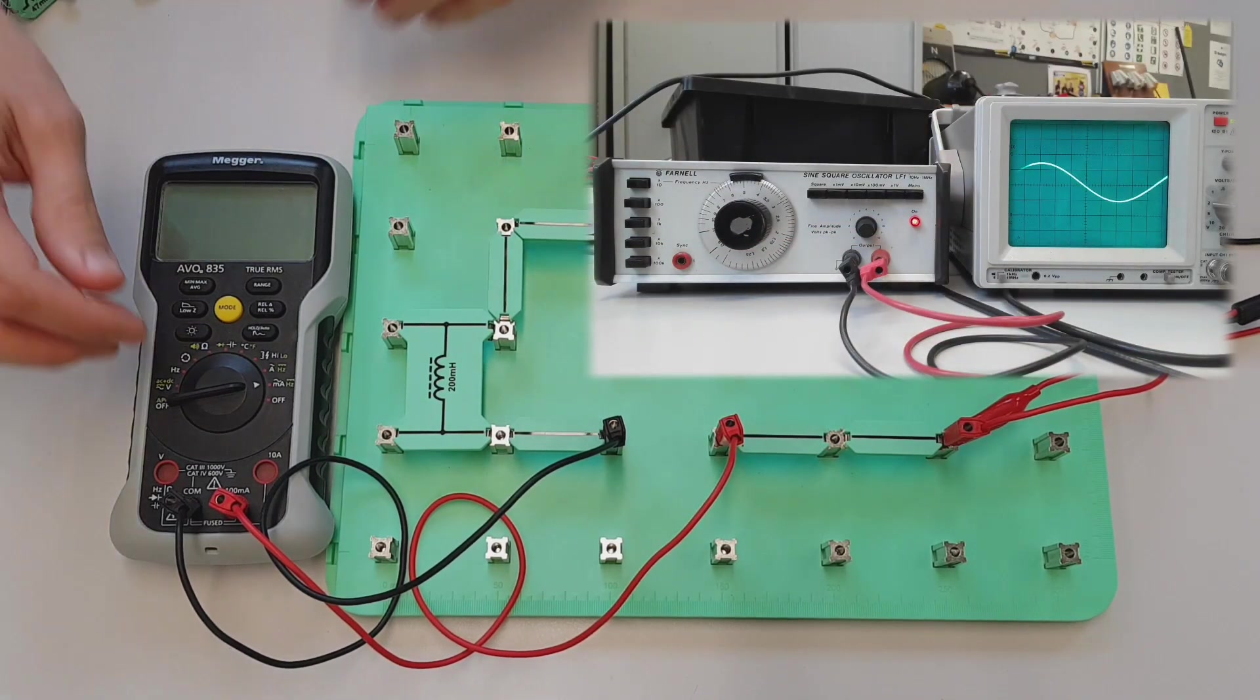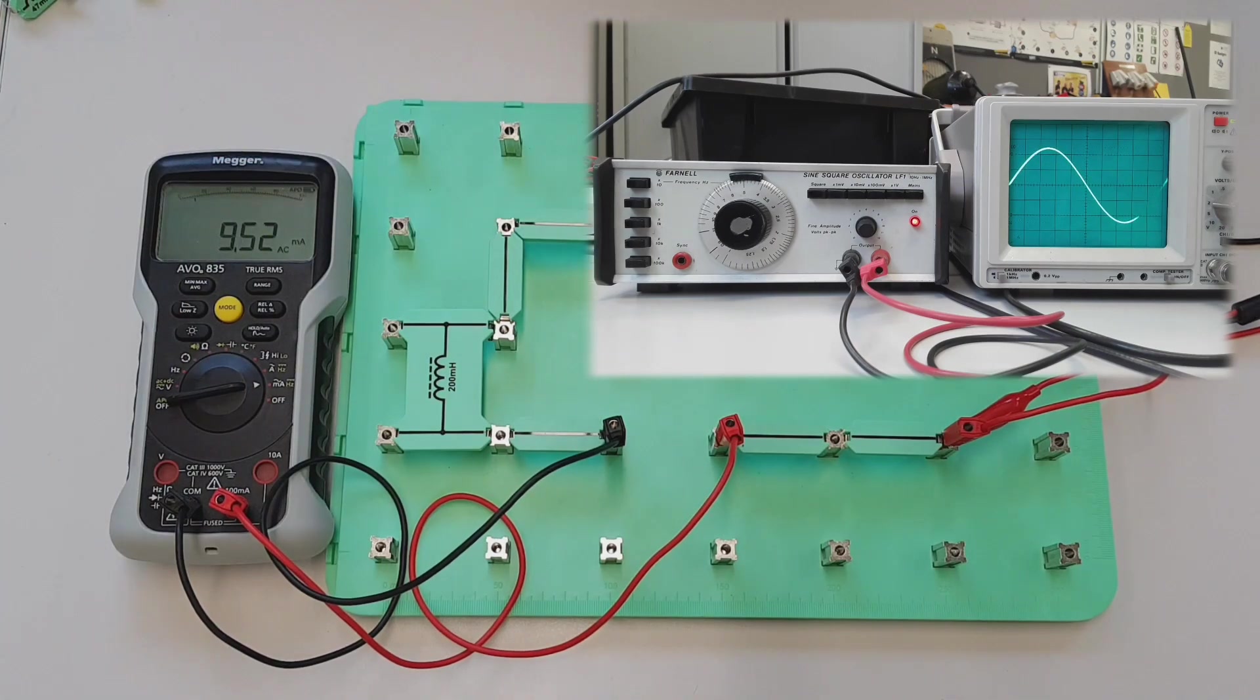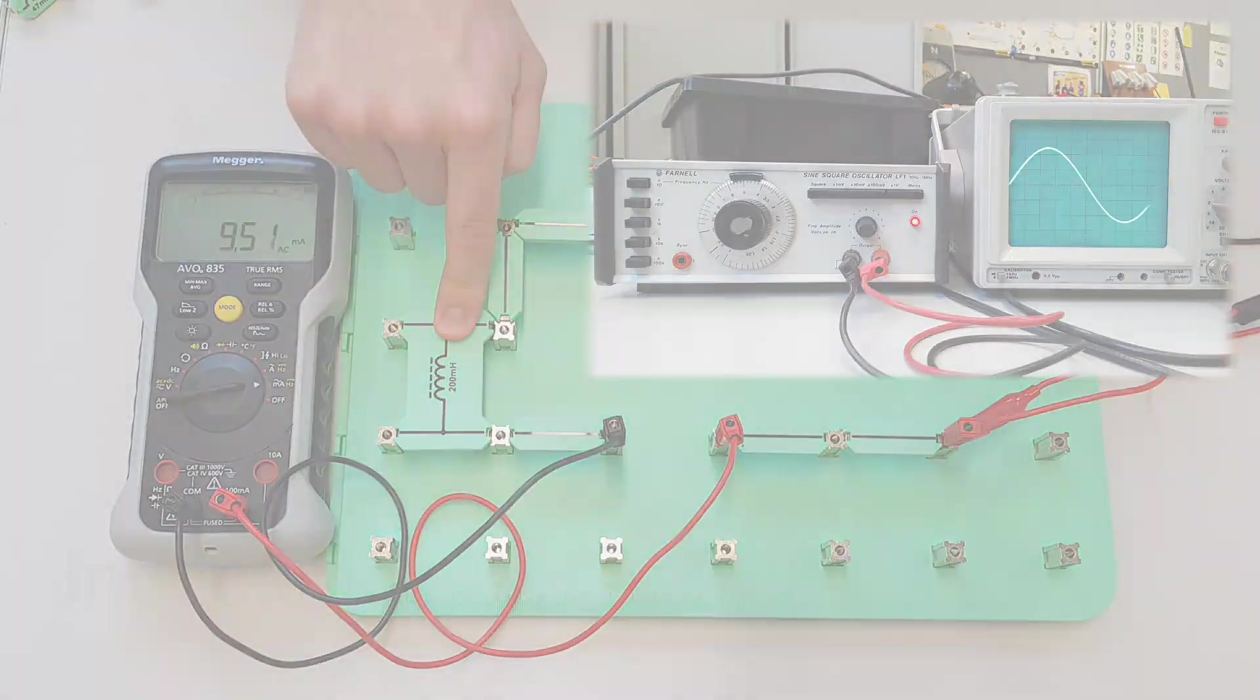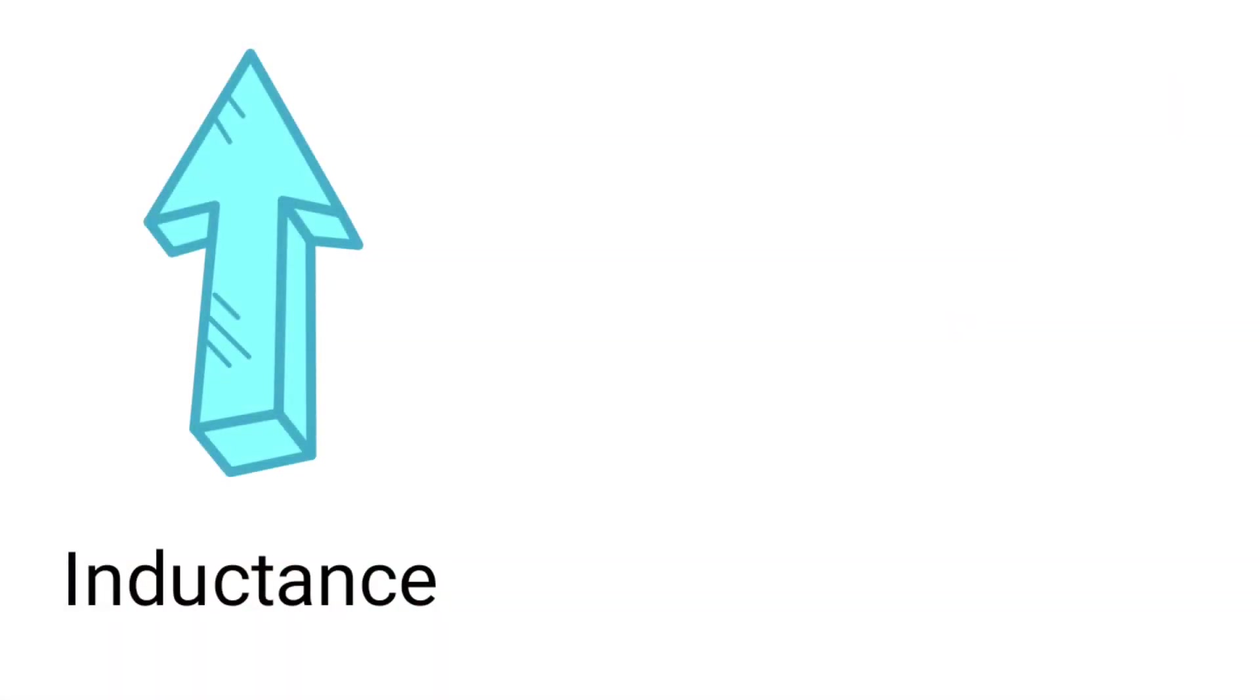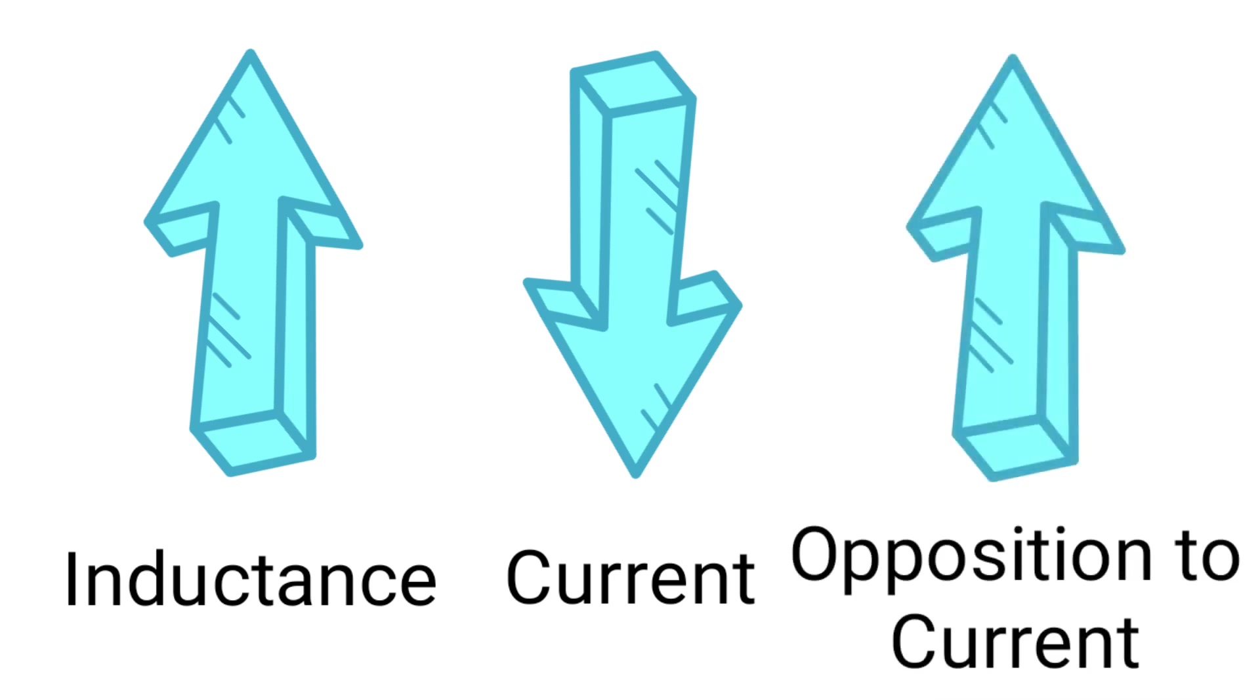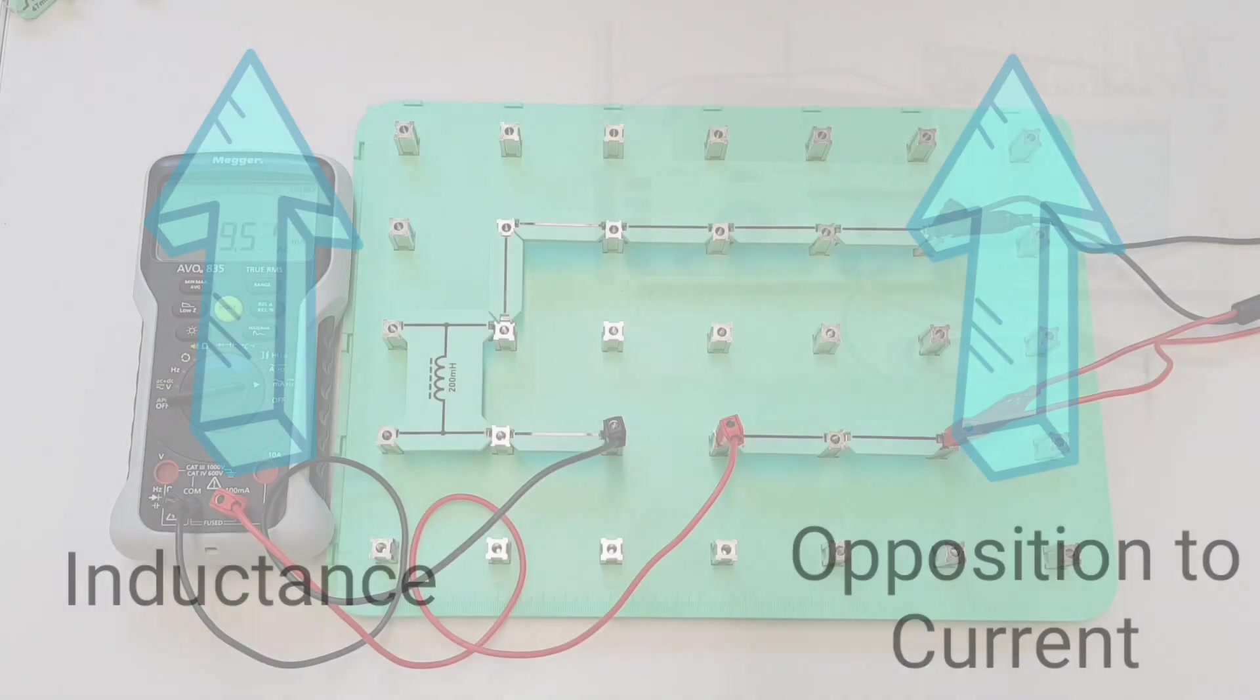We've got our circuit back on. That's interesting, can you see now what's happened to the current? The current has dropped. So again let's work through that relationship: we've increased the amount of inductance, that has decreased the current flow, and we know from Ohm's law that if you decrease current you must have increased the opposition to current flow. Therefore by increasing the inductance we have increased the opposition to current flow.